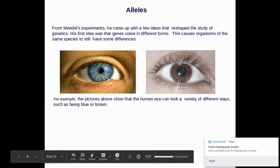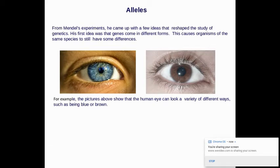So for Mendel's experiments, he came up with a few ideas that reshaped basically the idea of genetics. His first idea was that genes come in different forms. This causes organisms of the same species to still have some differences.